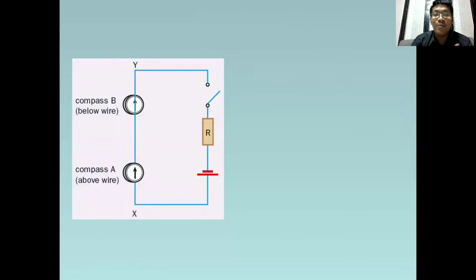In here, we have an experimental setup. And this is the experiment conducted by Orsted. Mag-aralan muna natin ang mga components ng experiment na ito. Meron tayo ditong battery na nakakonect sa isang resistor. At meron din tayong switch.